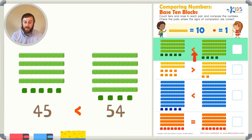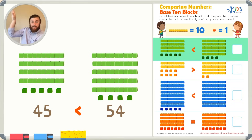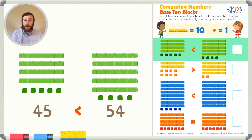Let's see if the comparison symbol is facing the right way. It is. The symbol is eating the 54, so we know that this is correct. We can go ahead and check the box.